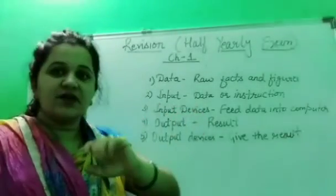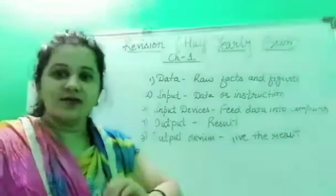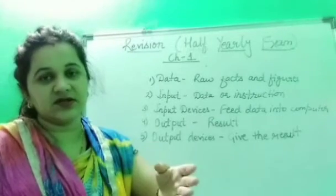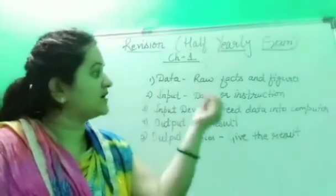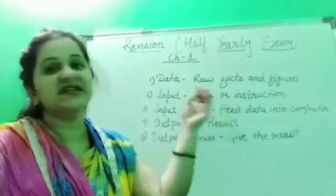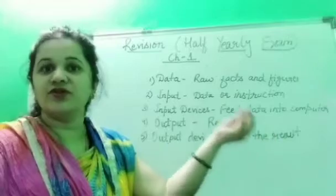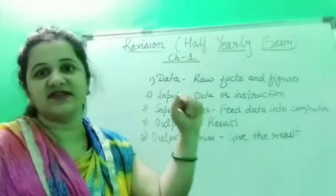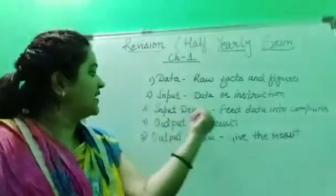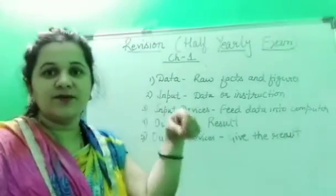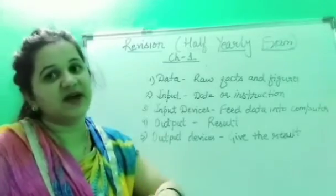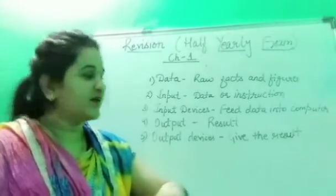Next come Input Devices. A computer cannot work on its own, so if you want to give any instruction you need some devices. The parts of the computer — the devices which help in feeding the data into the computer — are called input devices. Next comes Output — output is the result which is obtained after the processing is done on the data.